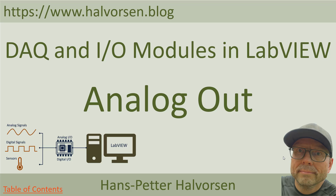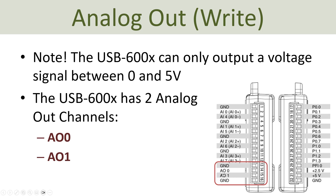In this DAC and IOM modules LabVIEW tutorial, we will see how we can use the analog output pins on the IOM module. Here you see the pins on the USB 6000x series. On the left side you have the analog pins, and in the bottom you have the analog output pins. For this USB 6000x series, you typically have two analog output channels: analog output zero and analog output one, each connected to a ground.